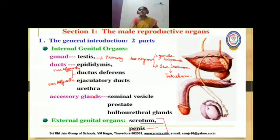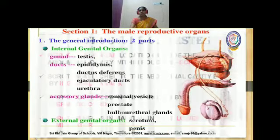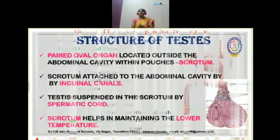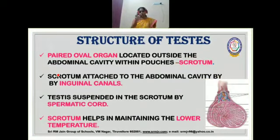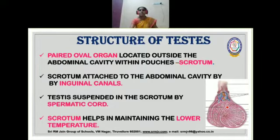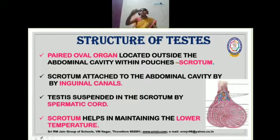First, we are going to start with the internal genitalia. Under internal genitalia, we begin with the testis. The testes are paired oval organs located inside a pouch-like muscular sac called the scrotum or scrotal sac. This scrotum is located outside the abdominal cavity of the human male.